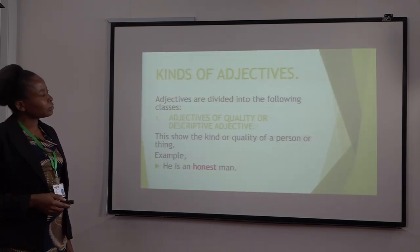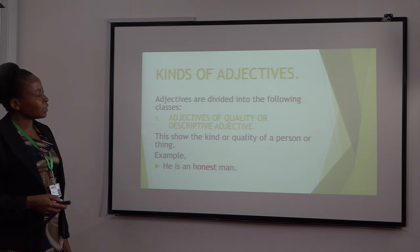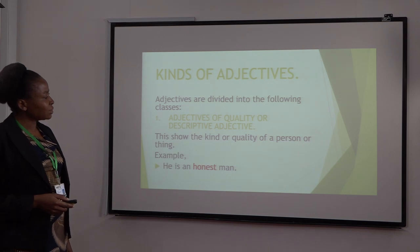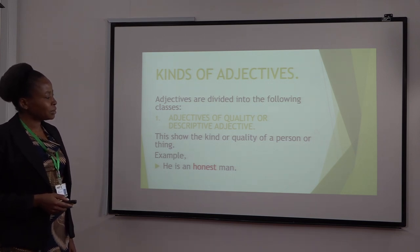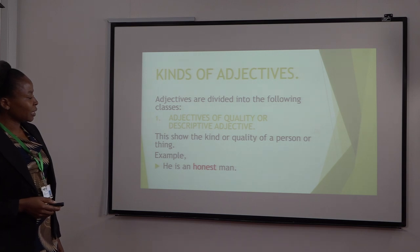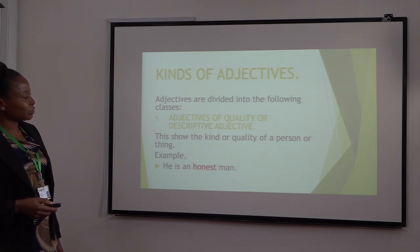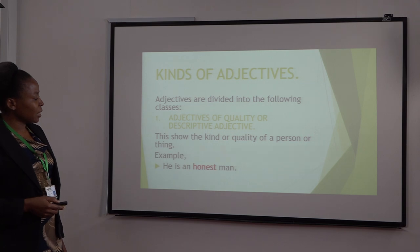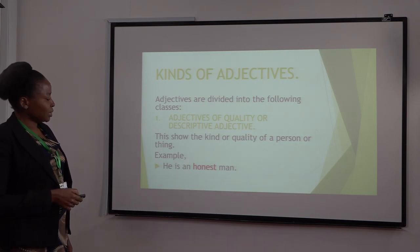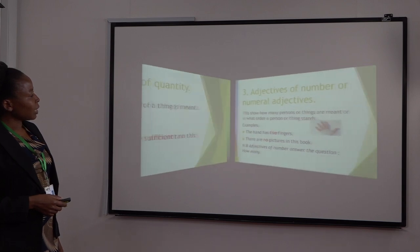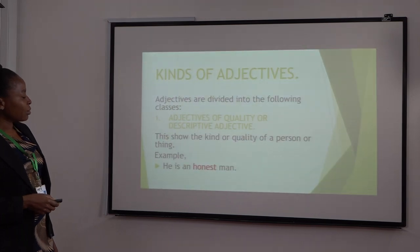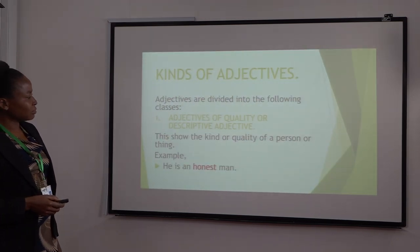Kinds of adjectives. Adjectives are divided into the following classes. One: Adjectives of quality, or descriptive adjectives. These show the kind or quality of a person or thing. For example, 'He is an honest man.' Honest is the adjective of quality.